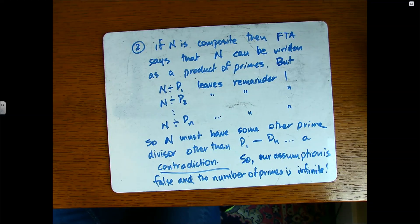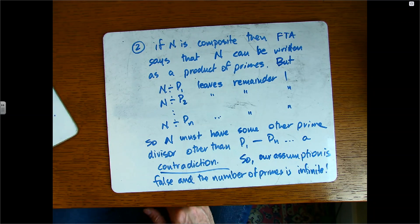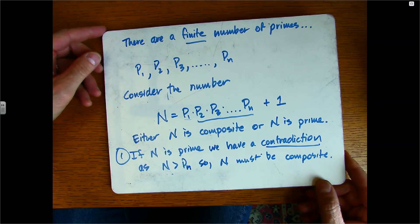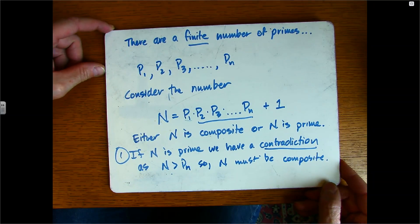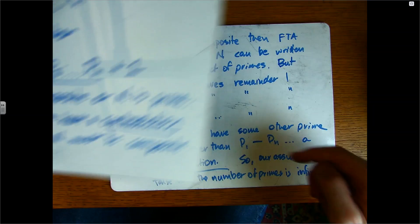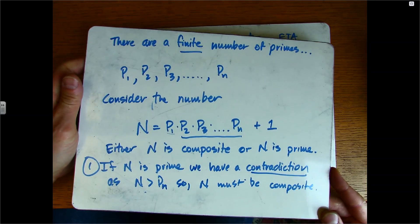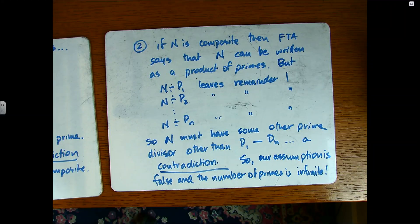If I get a contradiction in both cases, that means my assumption of a finite number of primes is wrong — our assumption is false, and the number of primes is infinite. It's certainly a complicated argument, but you're going to be teaching kids about primes, and you might get this question in class. If someone asks after the Sieve of Eratosthenes whether there are infinitely many primes, now you can say yes — because assuming a finite number leads to two contradictions, and therefore the assumption must be false. I hope that fills out your knowledge of prime number theory.